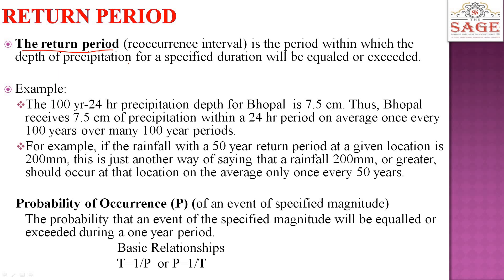In this example, if we are studying 100 years of data and the one-day (24-hour) precipitation depth, the maximum precipitation will be 7.5 cm. If the rainfall with a 50-year return period at a given location is 200 mm, this is just another way of saying that rainfall of 200 mm or greater should occur at that location on average only once every 50 years.